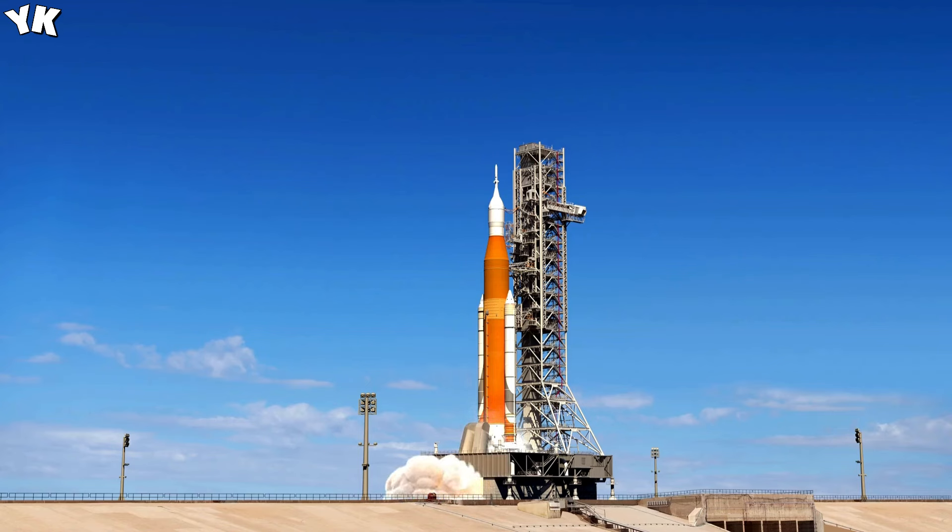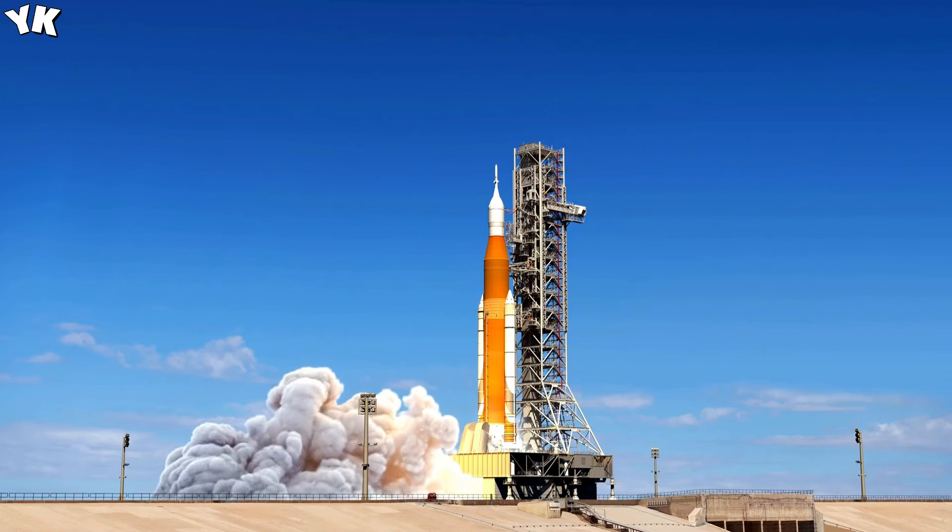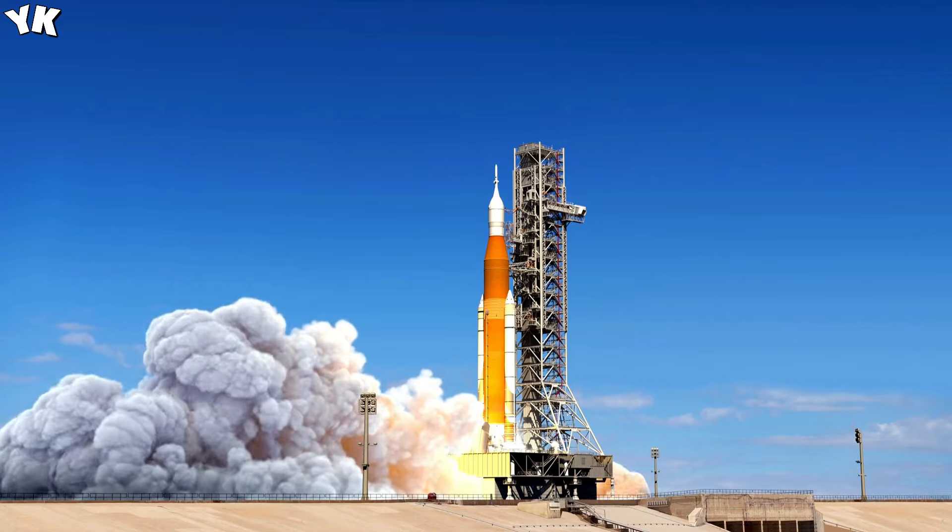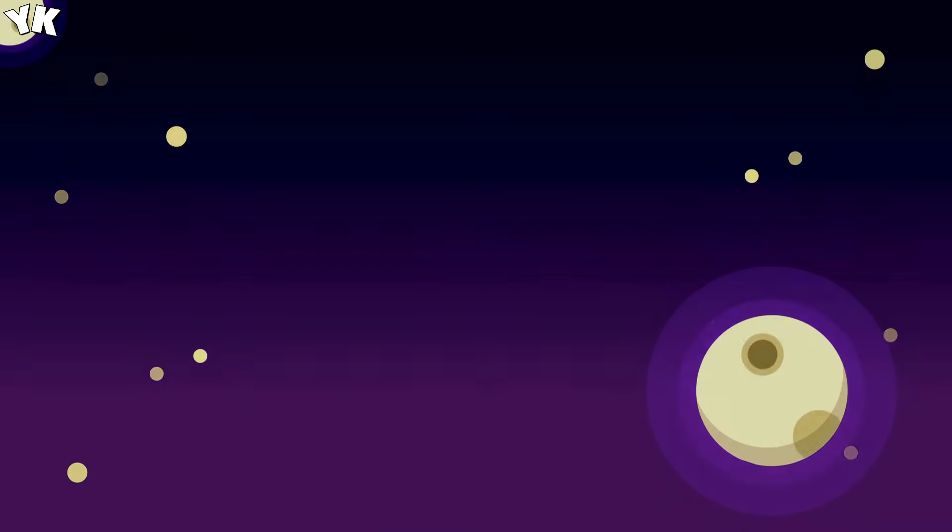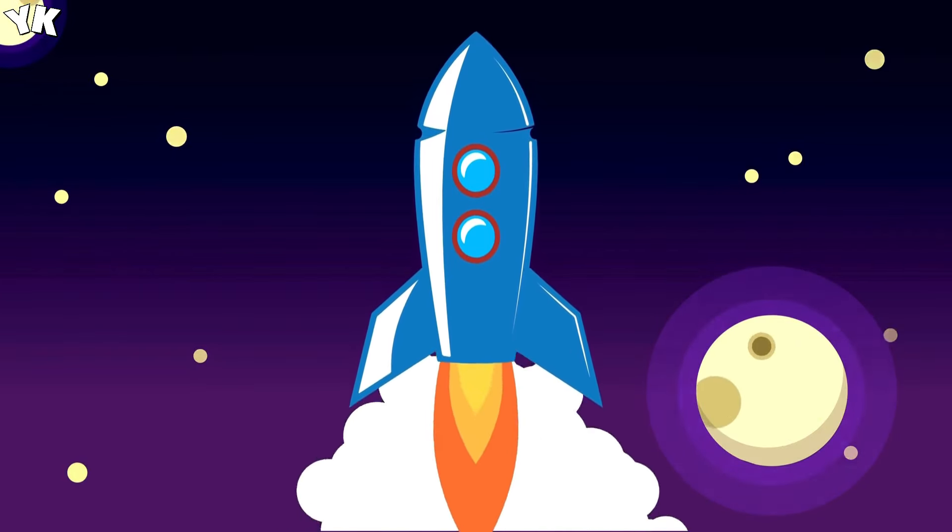In 1977, the Voyager 1 space probe was launched to study the outer solar system. The two Voyager space probes have become the longest operating spacecrafts in spaceflight history.